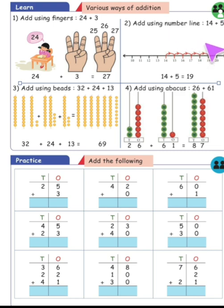Now add using number line: 14 plus 5. In the number line, we write up to 20 and from 14 we add 5 numbers: 15, 16, 17, 18, and 19. So 14 plus 5, the answer will be 19.